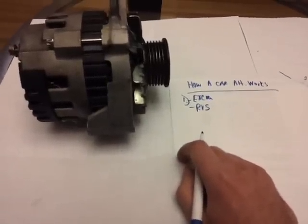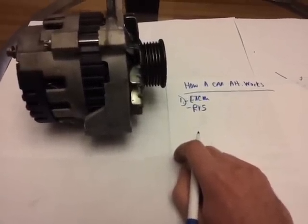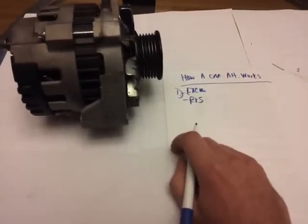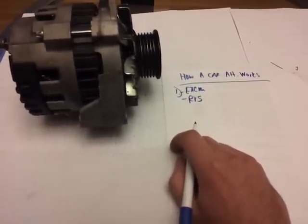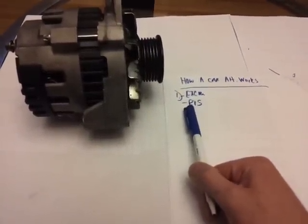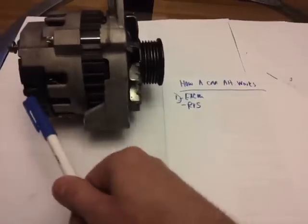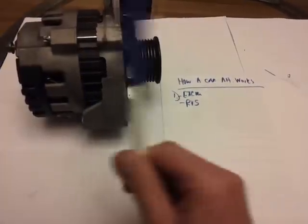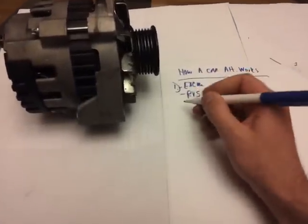Remember, what the alternator does essentially is it charges the battery so your car won't die when you're driving, because the battery alone can't take up all the load that your equipment is drawing. This remote voltage sensor wire is located close to the battery and acts as a messenger for this guy right here.